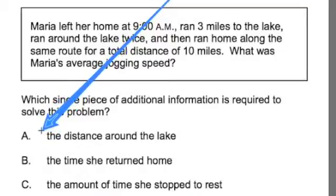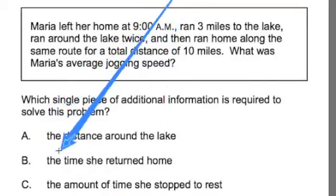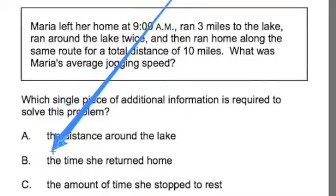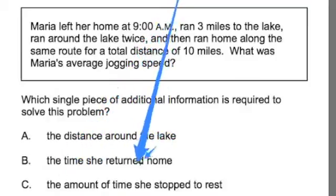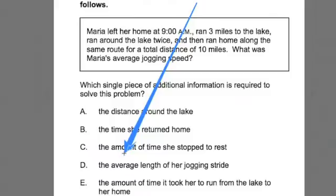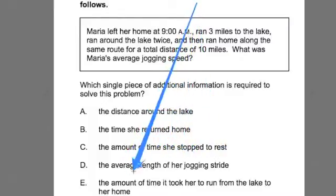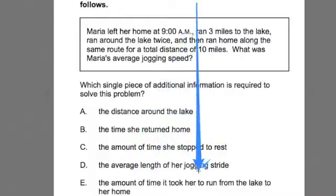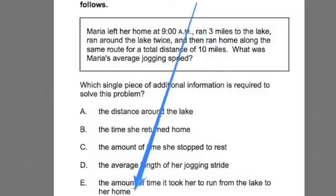We have some options. A: the distance around the lake. B: the time she returned home. C: the amount of time she stopped to rest. D: the average length of her jogging stride. Or E: the amount of time it took her to run from the lake to her home.